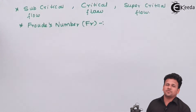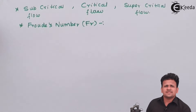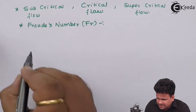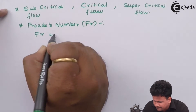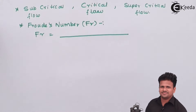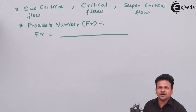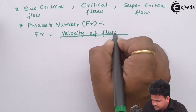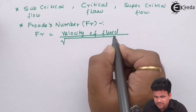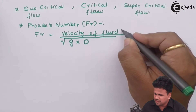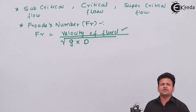Just as the Mach number is a dimensionless quantity defined as a ratio of two similar quantities, the Froude number is similarly defined. The Froude number is defined as the ratio of the velocity of the fluid to the square root of g times d.